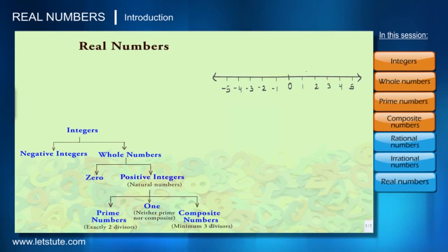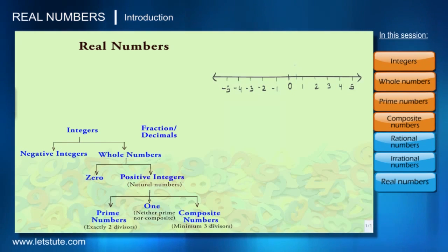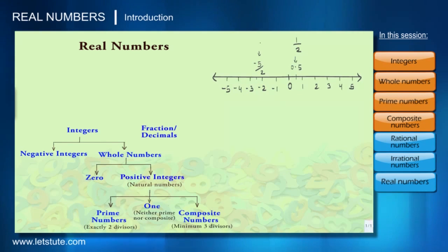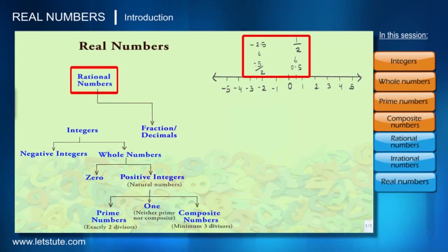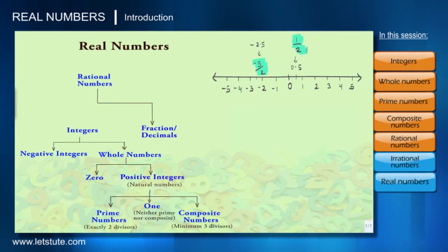On the number line, in between the integers there are many more numbers present in the form of fractions or decimals. For example, in between 0 and 1 there is the number 0.5, which can be written as the fraction 1/2. Similarly, in between −2 and −3 there is the number −5/2, or in decimal form −2.5. These fractions are called rational numbers. The word 'rational' comes from the word 'ratio,' as 1/2 and −5/2 are nothing but the ratio of two integers.